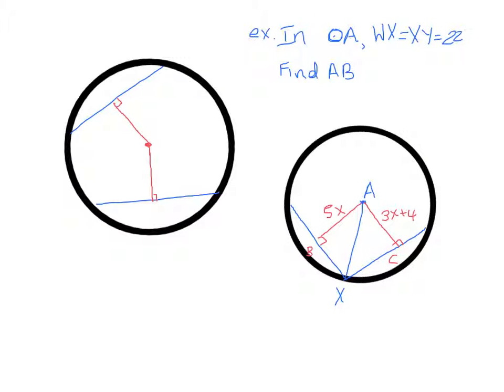So in this example we're being told that WX is equal to XY, which is equal to 22. As it turns out, we don't even need to know the fact that it's equal to 22. All we really need to know is that WX, well we first need to know where W is and where Y is. Alright, so we need to know that WX and XY are two chords that are equal in measure. So since we know that those two chords are equal in measure, then they're going to be the same distance from the center.